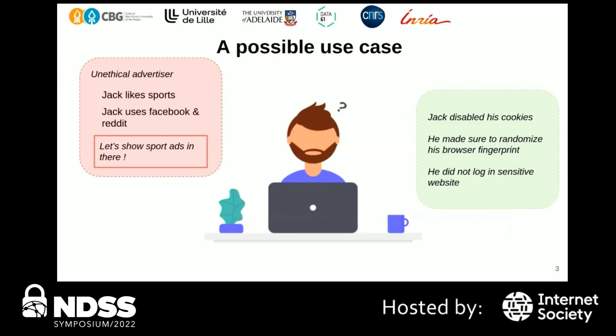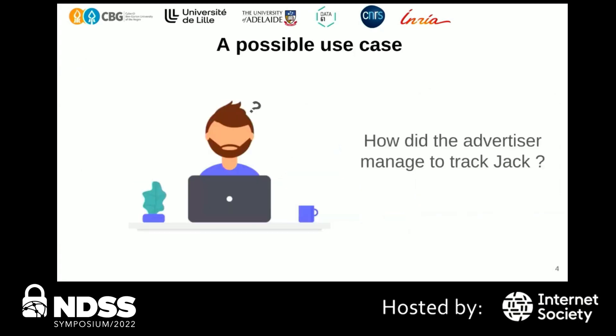What we didn't say is that Jack is a pretty privacy-aware user. Jack disabled his cookies and used a browser extension that randomizes his browser fingerprints, so he cannot be identified in a stateless setting. He also took care of the stateful aspect by not logging into any sensitive website — the sports website in this case. So Jack doesn't know how he's still seeing advertisements, because he took the necessary steps to hide himself. So how did the advertiser manage to track Jack?